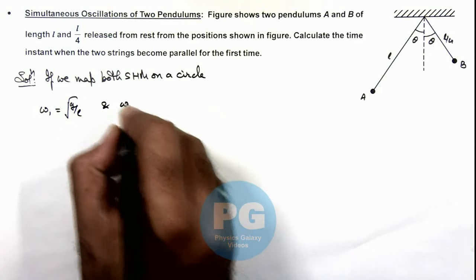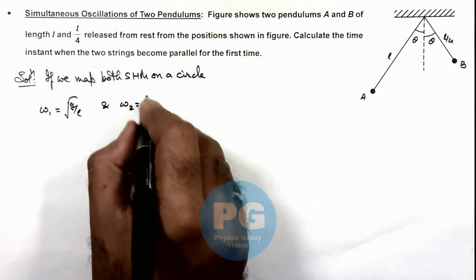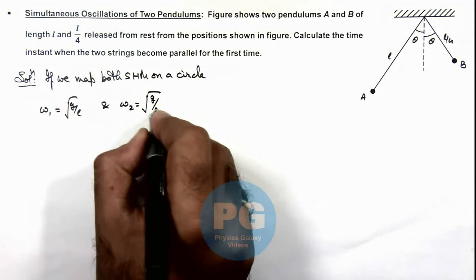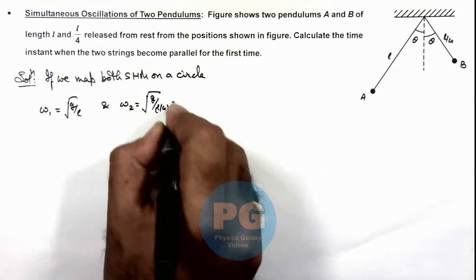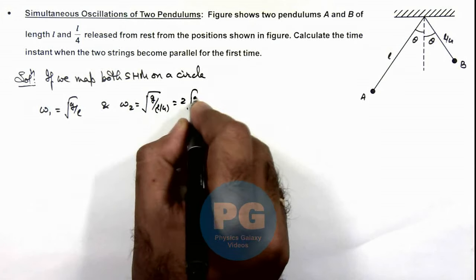And omega_2 for the pendulum B we can write it as root of g by l by 4. So this will be twice of root g by l.